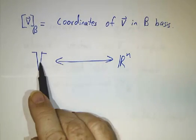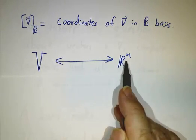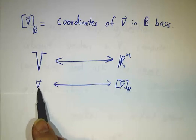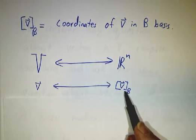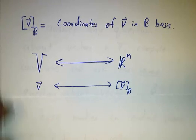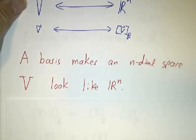Our vector space looks like R^n, because to every vector in the vector space, we associate a list of coordinates. That list of coordinates, that column, is an element of R^n. So our mantra is a basis makes an n-dimensional space look like R^n.